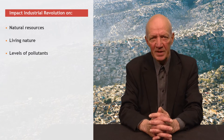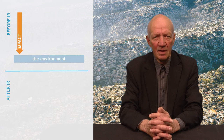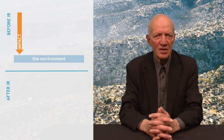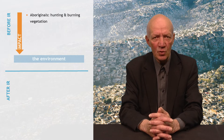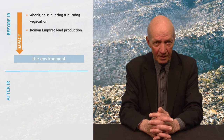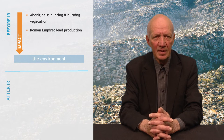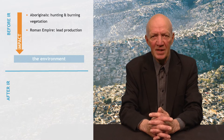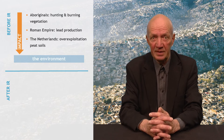It is not that humans before the Industrial Revolution had no large impacts on their environments. After their entry in Australia, Aboriginal hunter-gatherers drastically changed living nature by hunting and by burning vegetation. Lead originating in the emissions of Roman lead smelting about 2,000 years ago can still be found in the glaciers of Greenland. Between 1,000 and 500 years ago, the Netherlands lost much land to the sea because of overexploitation of peat soils — and this was before the Industrial Revolution.